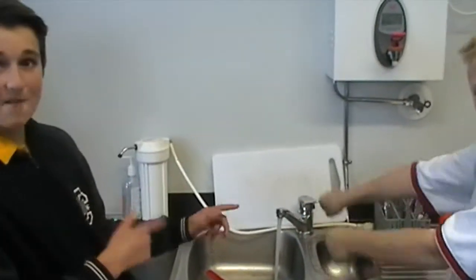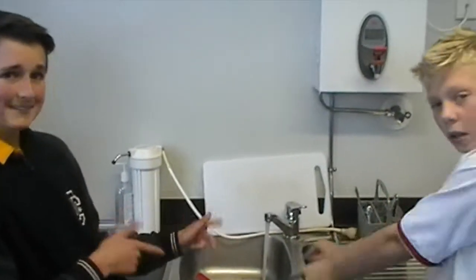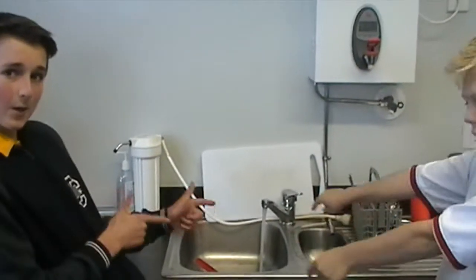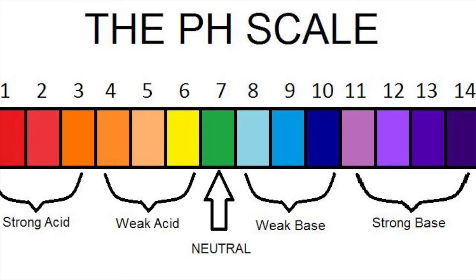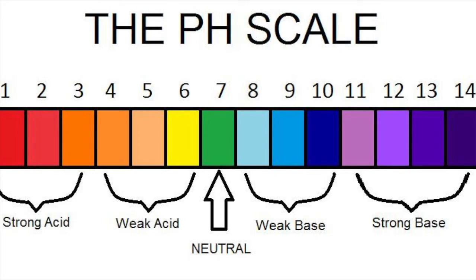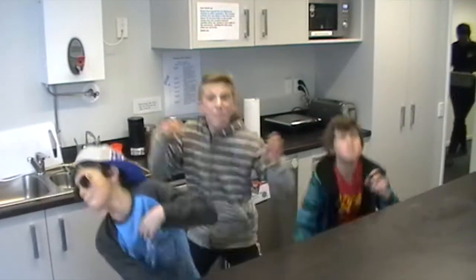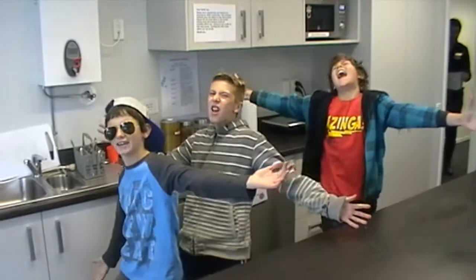At a pH of 7, it's a neutral — water's a neutral. Acids and bases are from two different places on the pH scale.